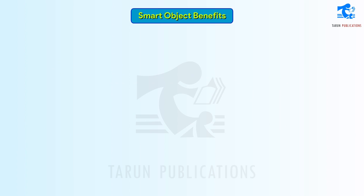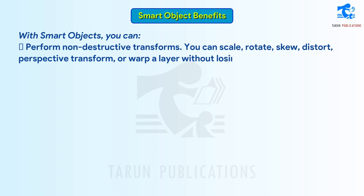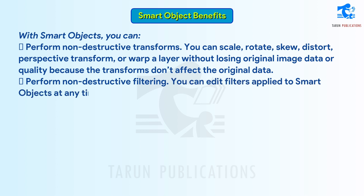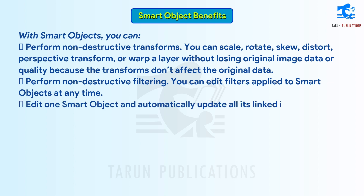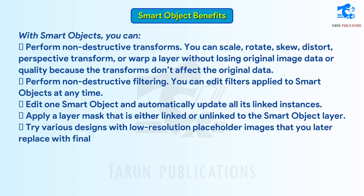Smart Object Benefits. With smart objects, you can perform non-destructive transforms. You can scale, rotate, skew, distort, perspective transform, or warp a layer without losing original image data or quality because the transforms don't affect the original data. Perform non-destructive filtering — you can edit filters applied to smart objects at any time. Edit one smart object and automatically update all its linked instances. Apply a layer mask that is either linked or unlinked to the smart object layer. Try various designs with low-resolution placeholder images that you later replace with final versions.